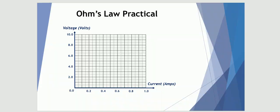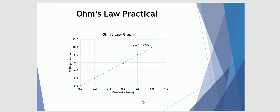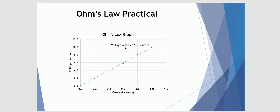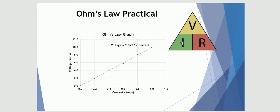It's a straight line and it tells me that Y equals 9.8727X. The Y variable is actually voltage, and the current is the X variable, so the real relationship is: voltage equals 9.8727 multiplied by the current. Some of you may recall the voltage and current relationship through Ohm's Law: V equals IR. If we want to find V, we get V equals I times R, which looks very similar to the expression we have for the gradient of this voltage-current graph.